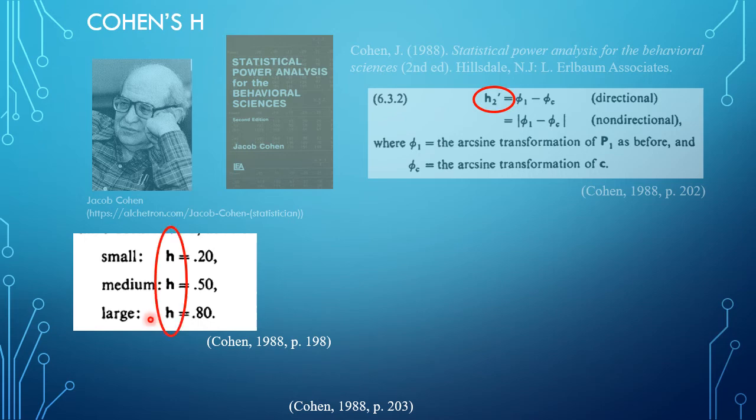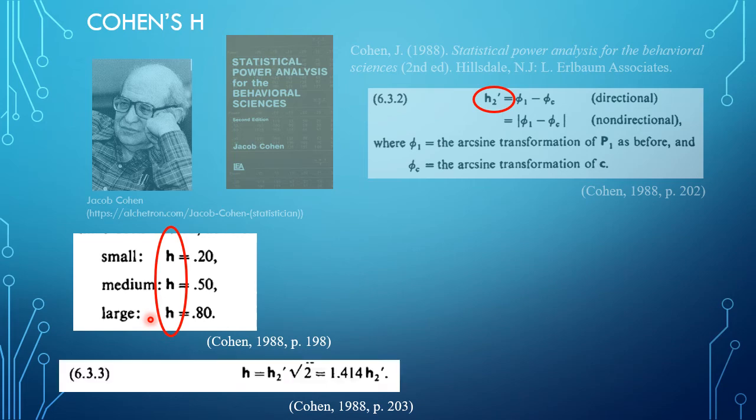Luckily, he gives on page 203 a transformation, which is simply you take your H2 and you multiply that with the square root of 2. So if you have an H2 value, you multiply it with the square root of 2, and then you compare it to these three.